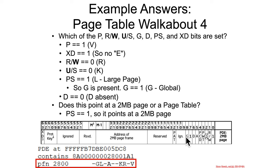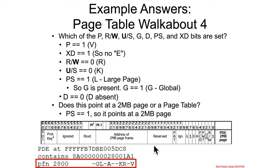This means it's a 2 megabyte page. If it's a 2 megabyte page, we interpret it according to this data structure, which means there is a G for global and a D for dirty. G is set, so this is a global page — it's set to stick in the TLB cache between different CR3 changes.